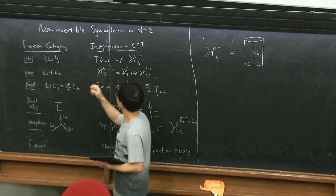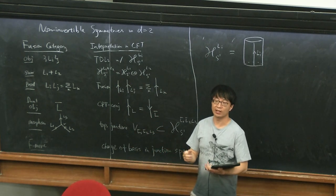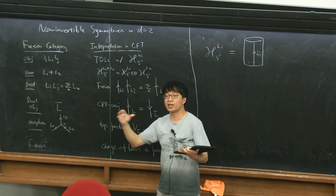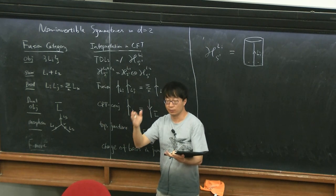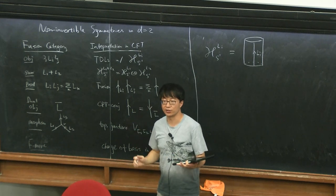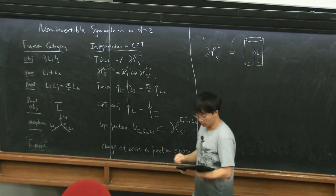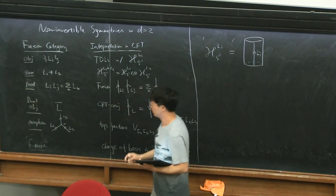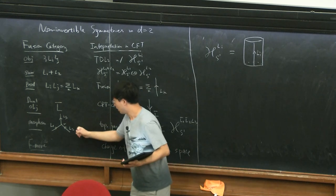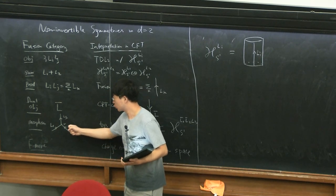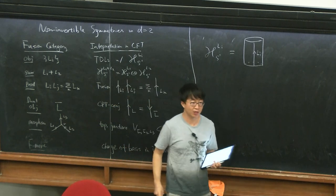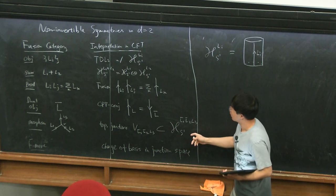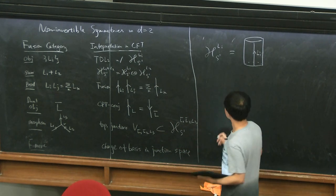Question: what does the direct sum mean for the CFT? It just means it's a composite line — if you compute a correlation function where you insert a direct sum of the line, that correlation function becomes a sum of the correlation functions in which each term has the individual line inserted. In any observable involving these line defects, you are free to replace this diagram with L-bar in opposite orientation.